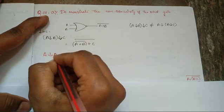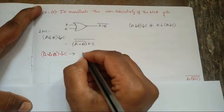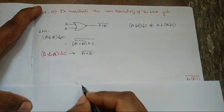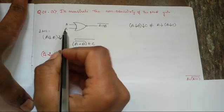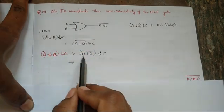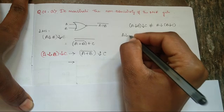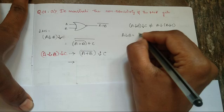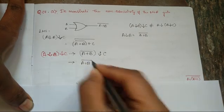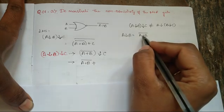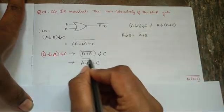A NOR B NOR C. Solving inside the bracket first, it is A plus B whole bar, NOR C. Now in the place of A, A plus B whole bar is there, and in the place of B, C is there. So writing it out: A plus B whole bar, plus C, whole bar.